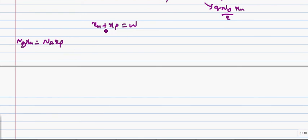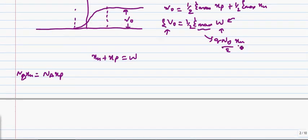Now, we can rewrite this x_n, x_p, w in terms of x_n itself, or x_n in terms of w we want. Now, substitute x_p. x_p, we can rewrite this as n_d over n_a times x_n.